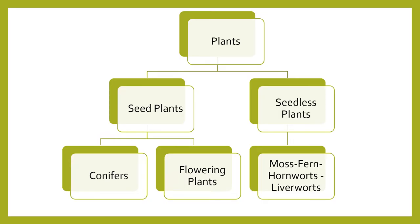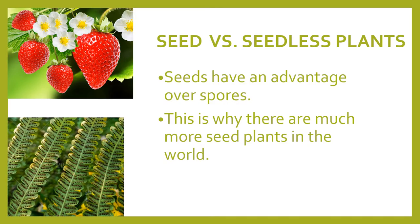As we already know, the plant kingdom is made up of two kinds of plants: seed plants and seedless plants. Seed plants are also vascular — they are the conifers and the flowering plants. Seedless plants can be vascular and non-vascular, and some examples are moss, fern, hornworts, and liverworts. We already covered this. Now we want to talk about seed versus seedless plants.